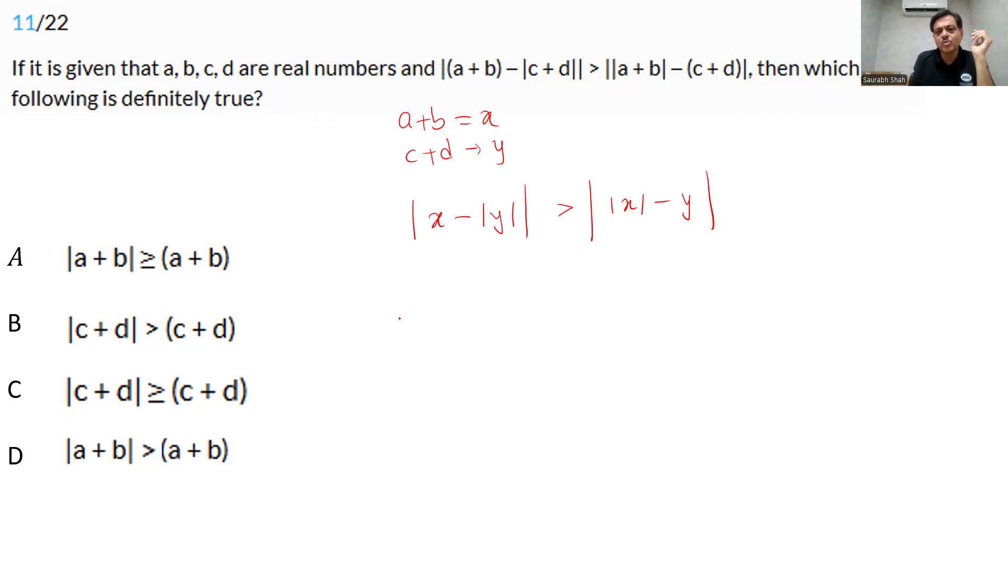Now let's try to put both x and y as positive. x is positive, y is positive. So what happens in this case? You simply say x minus y. Opening the modulus, it is x minus y will be greater than x minus y. No, this is not. x minus y cannot be greater. Mod x minus y cannot be greater than mod x and mod x minus y. They have to be equal.